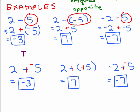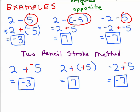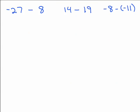That's the two pencil stroke method. Remember, there are 2 things you have to do: change the minus sign to a plus, and write the opposite of the next number. It's very important you do both. Here are 3 problems — try them on your own by rewriting the problem as adding the opposite. You can do it in one step using the two pencil stroke method, or take a second step to show the full rewrite.